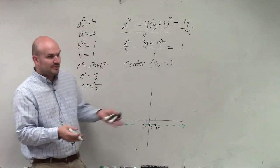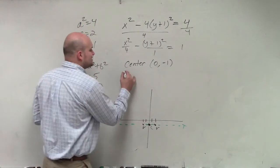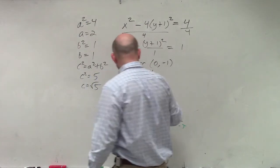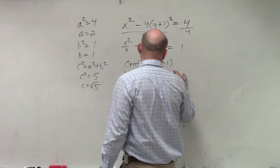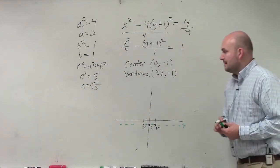And we'll label those our 2 vertices. Technically, guys, what did we really do? We just took 0 and added 2 and subtracted 2. So I can say my vertices are going to be plus or minus 2 comma negative 1. So it really went 2 to the right negative 1 and 2 to the left negative 1.